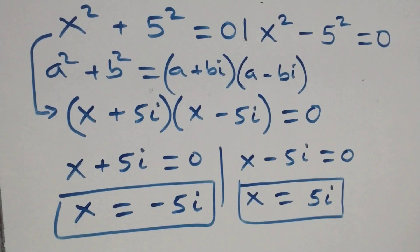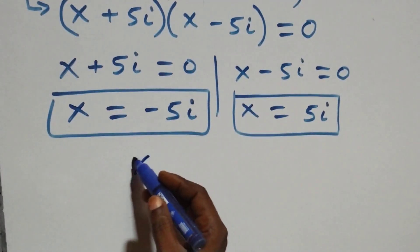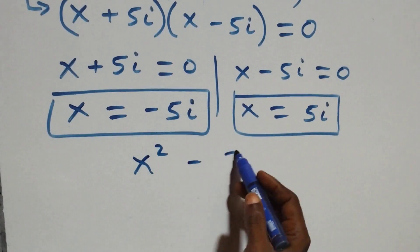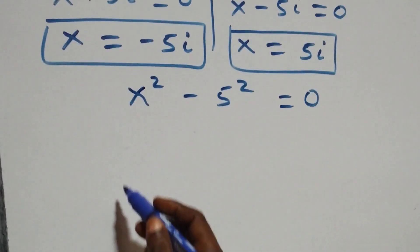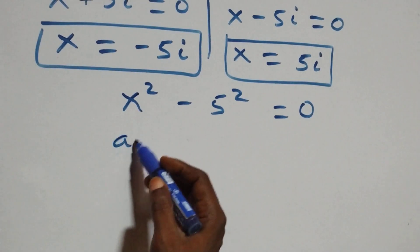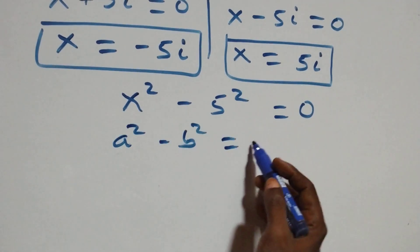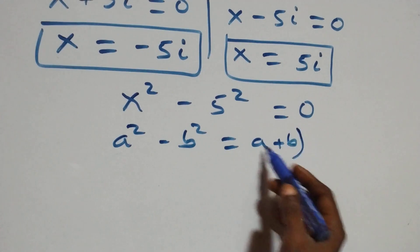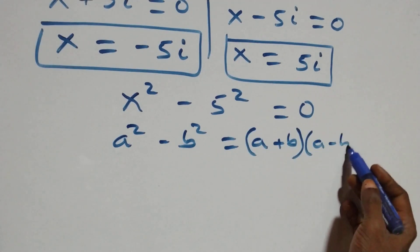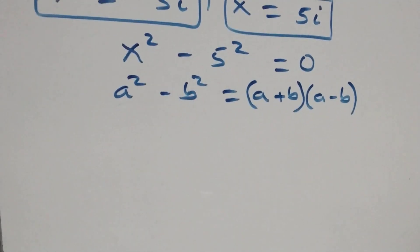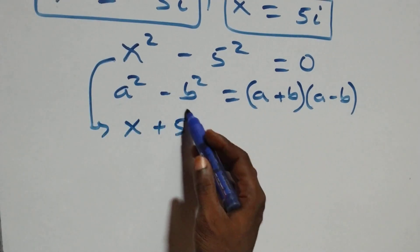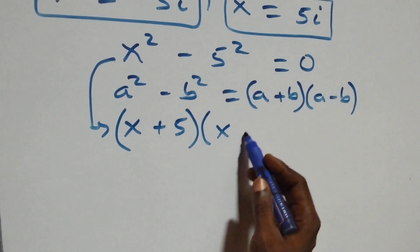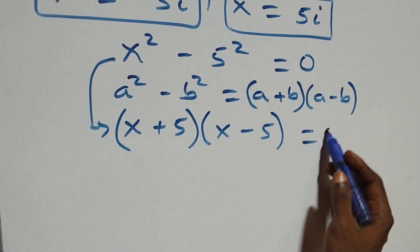From the second case here, we also apply difference of two squares. We have x squared minus 5 squared equals to 0. This follows a squared minus b squared equals (a + b)(a − b), so this becomes (x + 5)(x − 5) equals to 0.